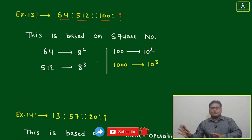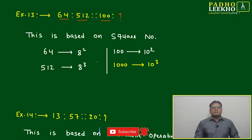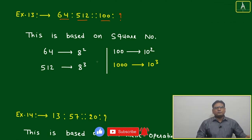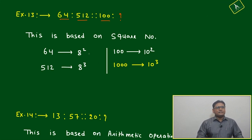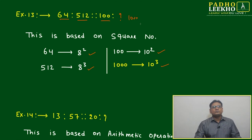It is given 64 - we can write 8 square. And 512 we can write 8 to the power 3. Then here 100 we can write 10 square. Then next number will be 10 cube. Simple relation: 8 square, 8 cube, 10 square, 10 cube.